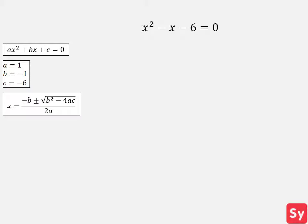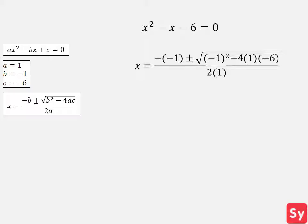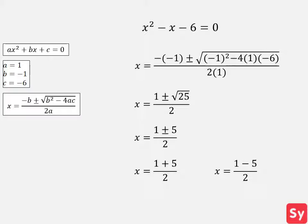Now let's take a look at the quadratic formula. We plug in the values of a, b, and c into the quadratic formula to find out what x is. This simplifies to x equals 1 plus or minus the square root of 25 over 2. We can simplify even more to x equals 1 plus or minus 5 over 2. Now we split this into two equations: x equals 1 plus 5 over 2, and x equals 1 minus 5 over 2. This simplifies to x equals 3 and x equals negative 2 — our answer.